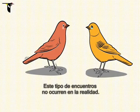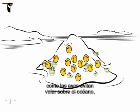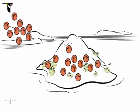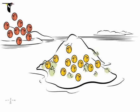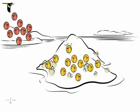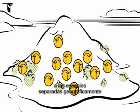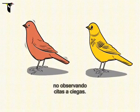But these kinds of dating match-ups don't happen in reality. Because our birds avoid flights across the open ocean, island birds do not regularly encounter mainland birds. Because genes from the two populations no longer intermix, genetic differences accumulate, and the two populations become different species. So in practice, scientists classify species separated in space by their genetic differences, not by observing blind dates.